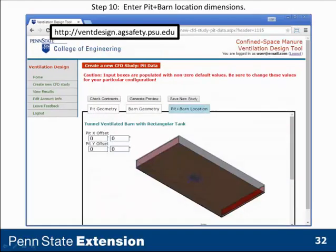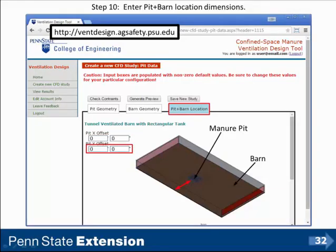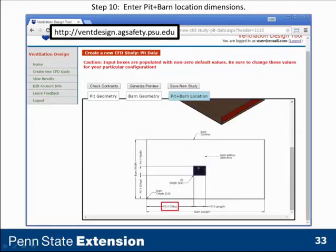We look at the pit plus barn location. We have the manure pit and we have the barn. We could have a partial manure pit or a full manure pit underneath the barn, and we locate that manure pit relative to the barn with x and y offsets. In our case, since we have a full-size manure pit under the barn, my x offset is zero and my y offset is also zero.